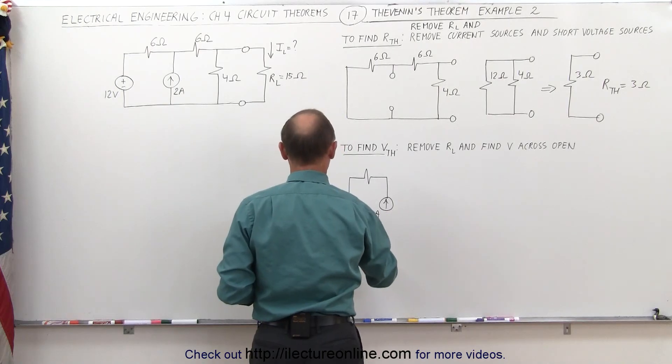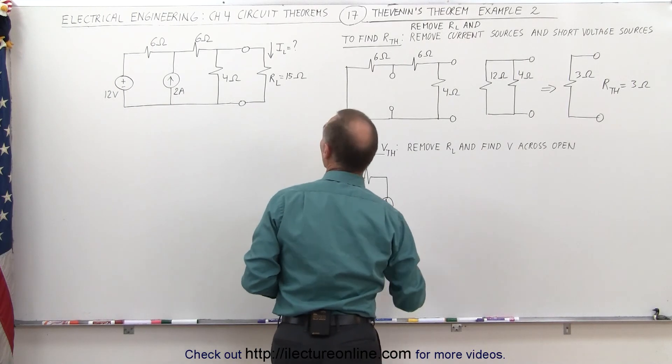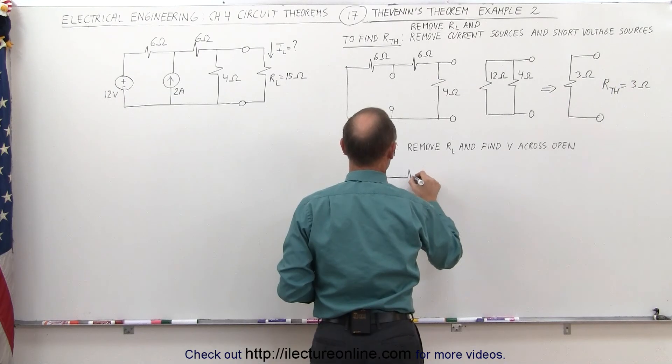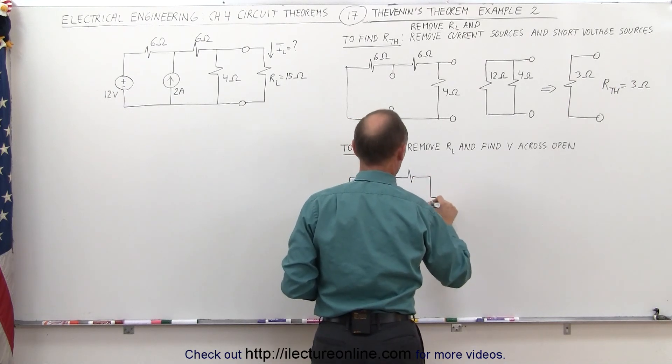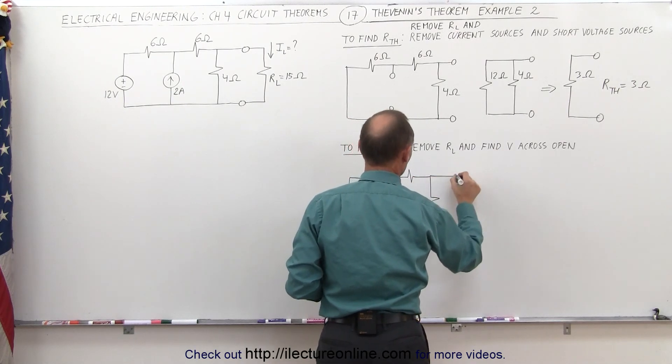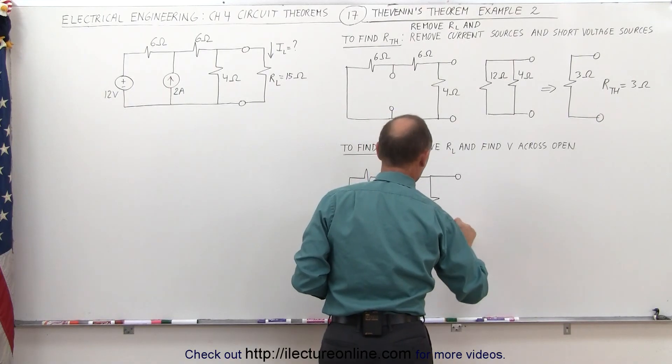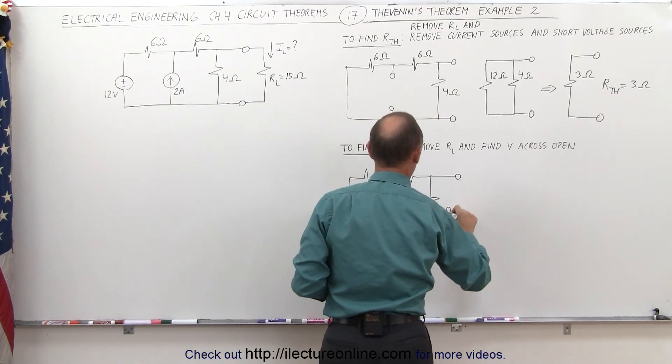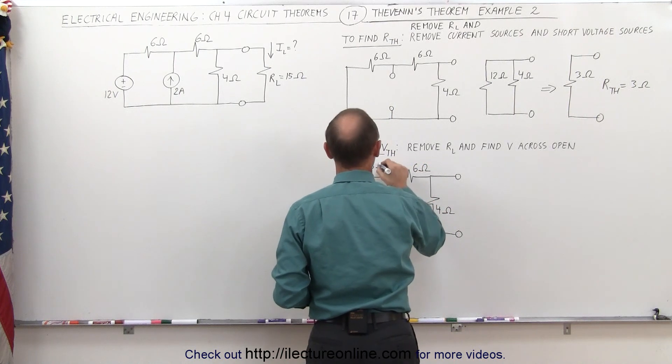So this is 12 volts. We still have a 6 ohm resistor here, and a 4 ohm resistor here, and then the 2 terminal ends right there. So this is 4 ohms, this is 6 ohms, and this is 6 ohms.